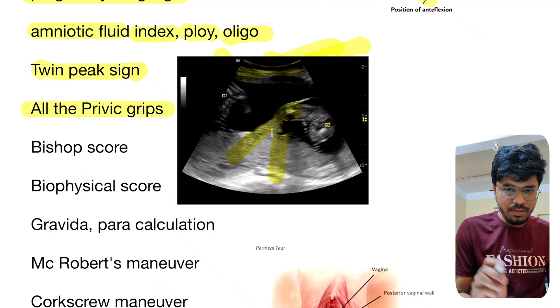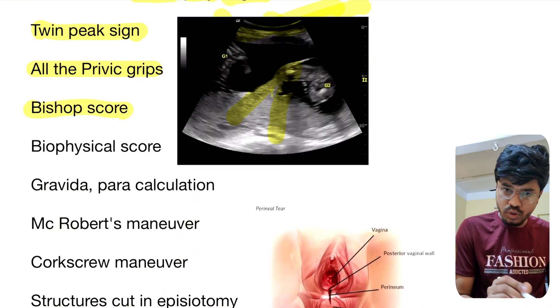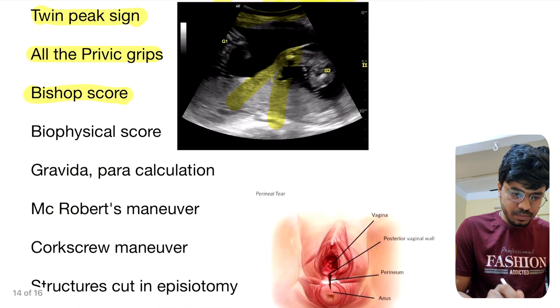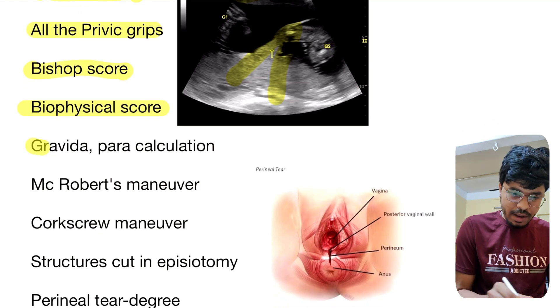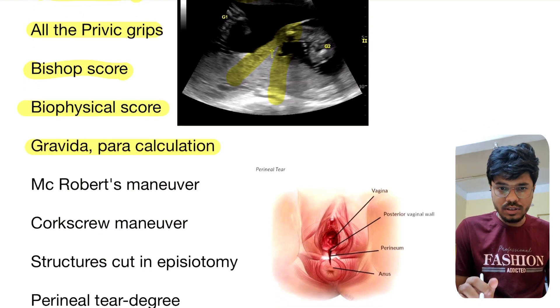All the pelvic grips, Bishop score, biophysical score, gravida and para calculation — very very important.